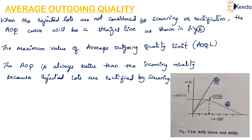If the lots are considered for screening or rectification and the Average Outgoing Quality Limit is determined from that curve, then the shape of the curve is as shown. For lots which are considered for screening or rectification, we can draw an Average Outgoing Quality curve plotted against probability of acceptance (PA) into 100% defective and the assumed process quality. This is all about the Average Outgoing Quality.